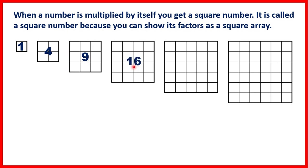Here we have sixteen squares because four times four is sixteen. Here we have twenty-five squares altogether because five times five is twenty-five. And here we have thirty-six squares because six times six is thirty-six.